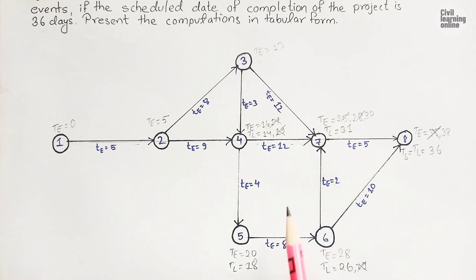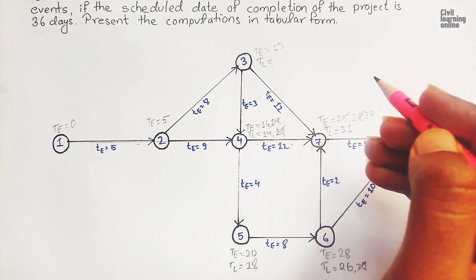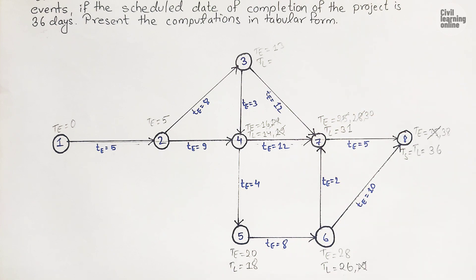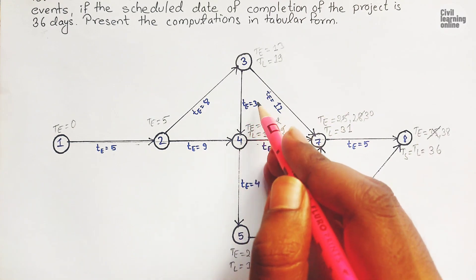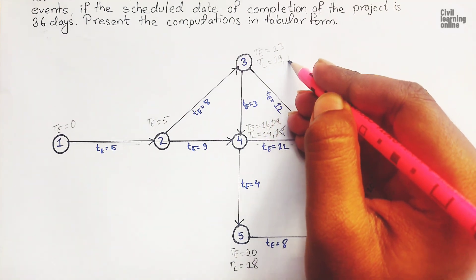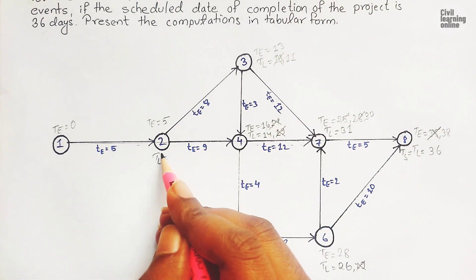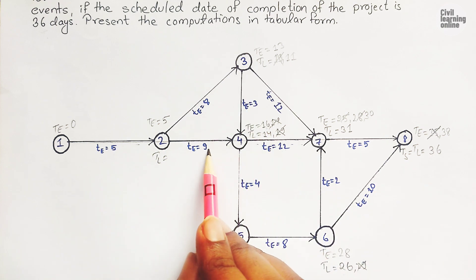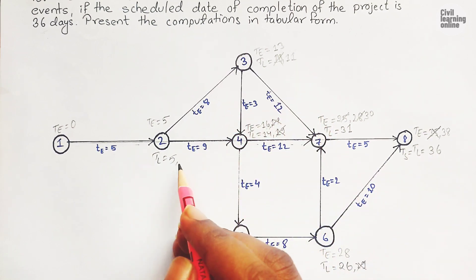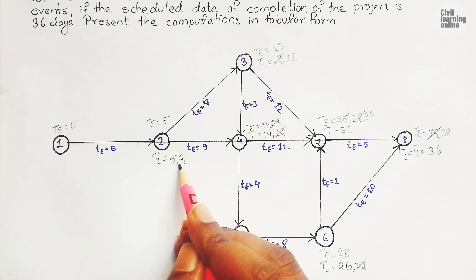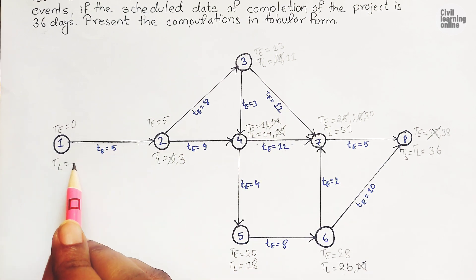TL of event three: event three has two successors, events four and seven. Thirty-one minus twelve is nineteen, and fourteen minus three is eleven. Minimum is eleven, so TL of event three is eleven. TL of event two: event two has two successors. Fourteen minus nine is five, and eleven minus eight is three. Minimum is three, so TL of event two is three. TL of event one: three minus five equals minus two.